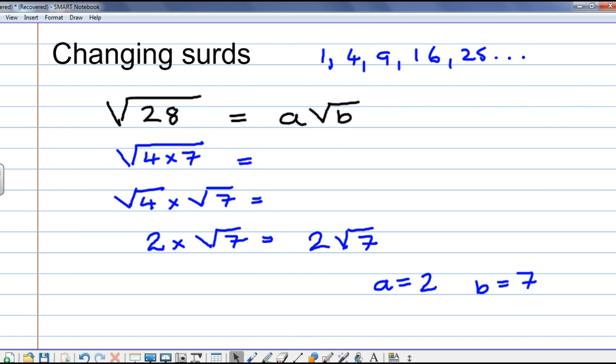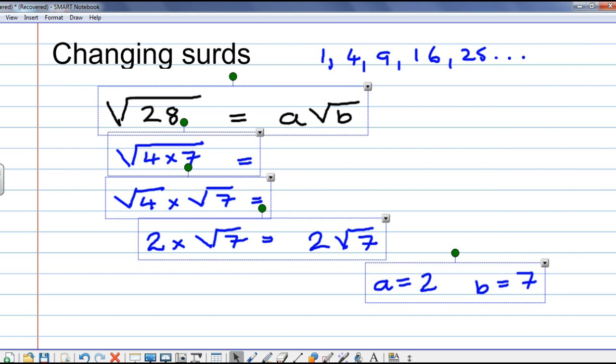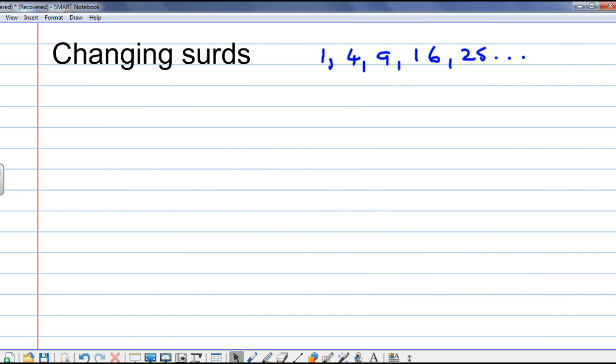We want to write root 80 in the form a root b. Now, what's the largest square number that's a factor of 80? Well, the answer is 16.